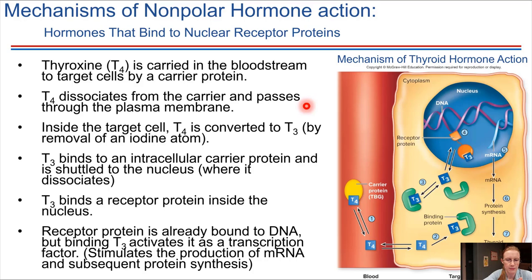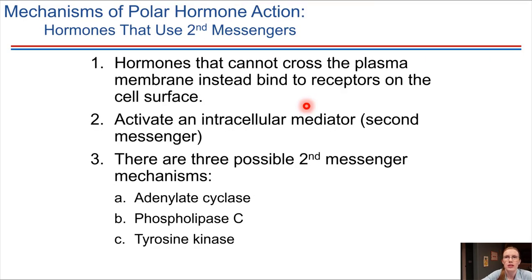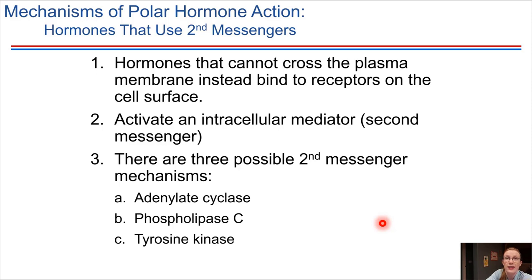In contrast, we can talk about hormones that are polar. If it's a polar molecule, it's not going to be able to cross the plasma membrane without some sort of special transport mechanism. Polar hormones bind to the surface of the plasma membrane — there's a receptor embedded in the plasma membrane — and binding is going to initiate some sort of a second messenger system inside of the cell. We're going to look at three mechanisms: the adenylate cyclase system (the cAMP messenger system), and two others. Take your time as you go through each one.